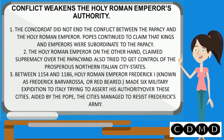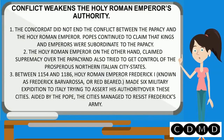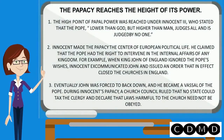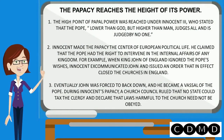The Concordat did not end the conflict between the Papacy and the Holy Roman Emperor. Popes continued to claim that kings and emperors were subordinate to the Papacy. The Holy Roman Emperor, on the other hand, claimed supremacy and tried to get control of the prosperous northern Italian city-states. The high point of Papal power was reached under Innocent III, who stated that the Pope, lower than God but higher than man, judges all and is judged by no one.